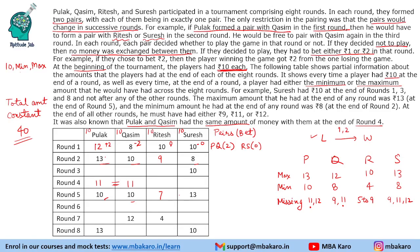In round 2, the changes are plus 1, plus 2, minus 1, minus 2. So plus 2 pairs with minus 2, and plus 1 pairs with minus 1. PR had a pair with a bet of 1 rupee, and QS had a pair with a bet of 2 rupees. Round 2 is now filled.